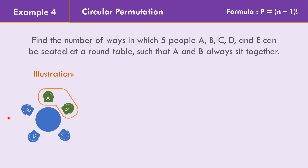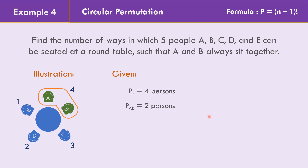As shown in the illustration, A and B are always seated together. The given is N equals 4, because we treat C, D, E as three separate persons and A-and-B together as one unit — making 4 persons total. The restriction is that A and B always sit together, which accounts for 2 persons seated as a pair.